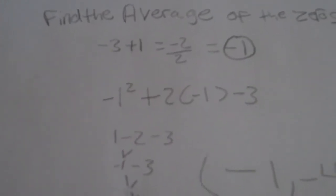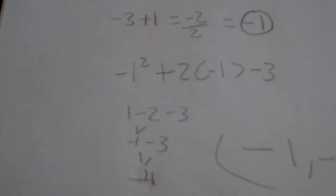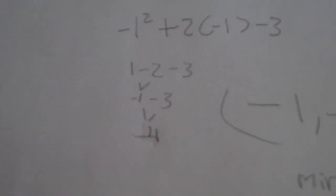And to find the y value, you just plug the x value back into the original equation. So you would have negative 1 squared plus 2 times negative 1 minus 3. And when you do this, you'll find the y value of your vertex, which is negative 4. So your vertex will be negative 1 comma negative 4. And this point is a minimum on the graph since a is a positive value.